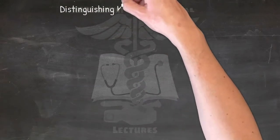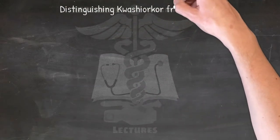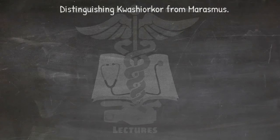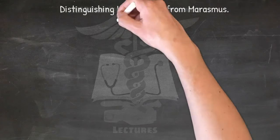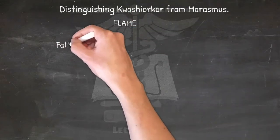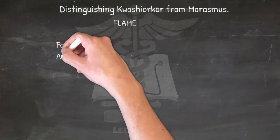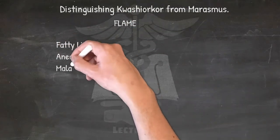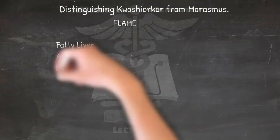Distinguishing kwashiorkor from marasmus. Kwashiorkor: FLAME — Fatty liver, Anemia, Malabsorption, and Edema.